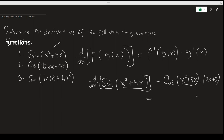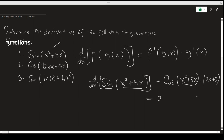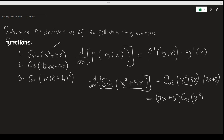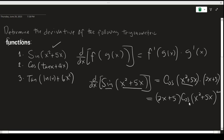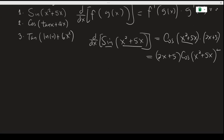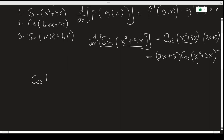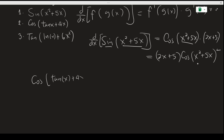We can rearrange this expression by applying the commutative property of multiplication to get 2x plus 5, cosine of x squared plus 5x. This is our final answer. Now let's find the derivative of the function in number 2: cosine of tangent x plus 4x.